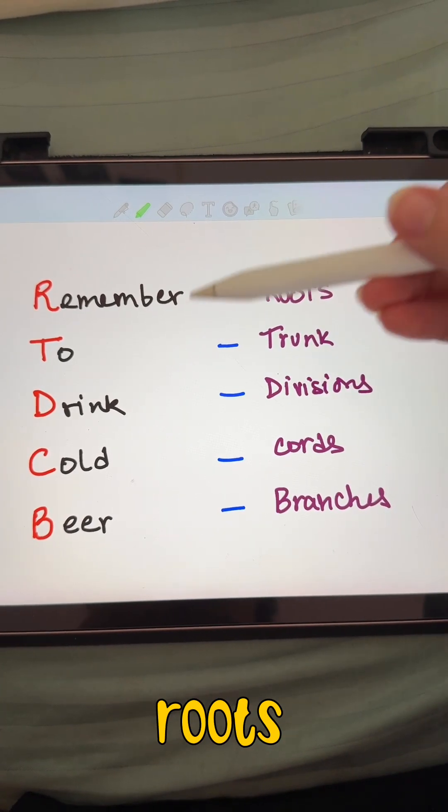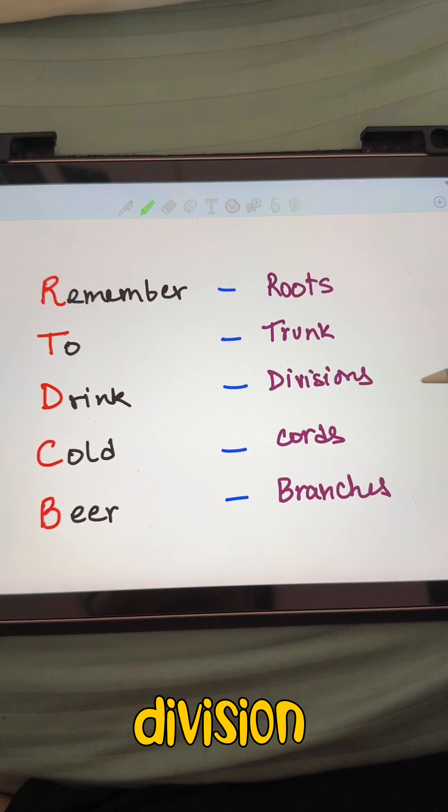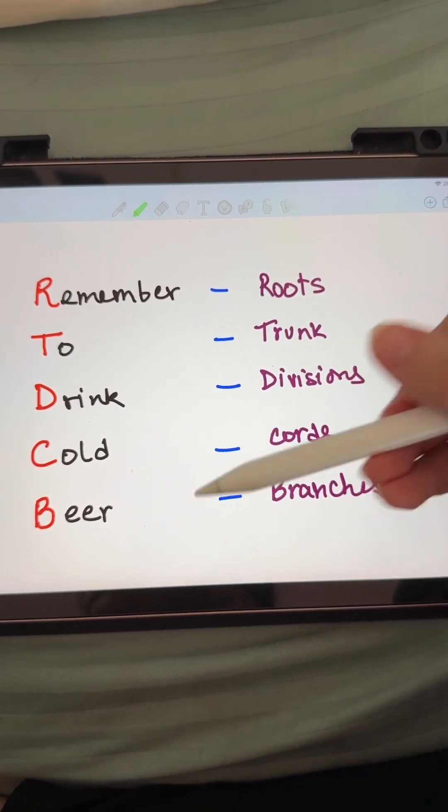Before that, I want to say remember to drink cold beer. From R, you must remember roots, T, trunk, D, divisions, C, cords, B, branches.